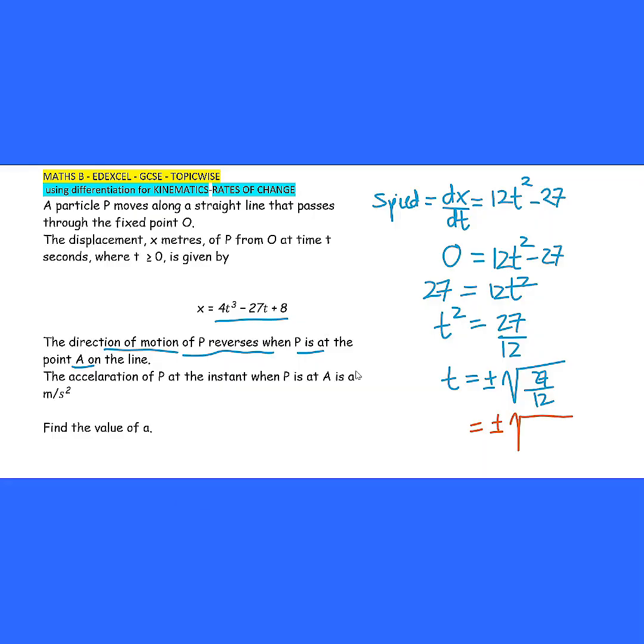If we continue, we will simplify 27 divided by 3. And then we will get 27 divided by 3 is 9, 12 divided by 3 is 4. So 9 is 3, square root of 4 is 2, so plus minus 3 over 2. Since t has to get the positive value, we take t equals to positive 3 over 2 seconds.